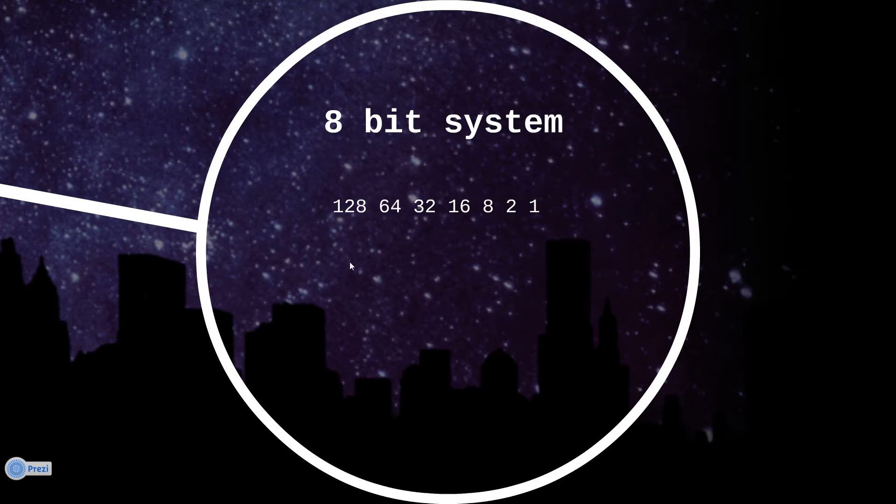In the 8-bit system, it goes up in twos. It doesn't go 2, 4, 6, 8; it multiplies by 2 from the previous number. One times 2 is 2, 2 times 2 is 4, 4 times 2 is 8, 8 times 2 is 16, 16 times 2 is 32, 32 times 2 is 64, and I forgot to add a 4 there. That's how the places work.